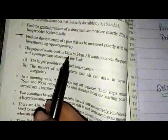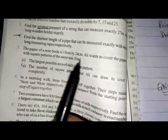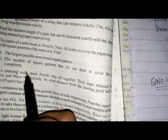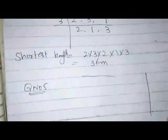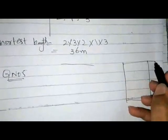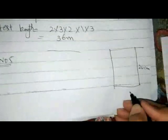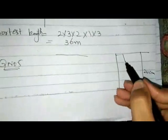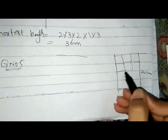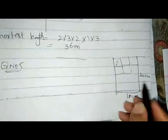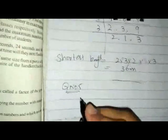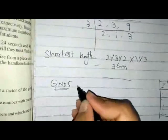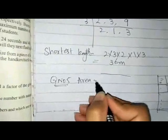Question 5: The paper of a notebook is 18 centimeter by 24 centimeter. Ali wants to cover the paper with square patterns of the same size. Find the largest possible area of each square pattern and the number of square patterns that Ali can draw to cover the paper completely. We have a paper whose dimensions are 24 cm and 18 cm.